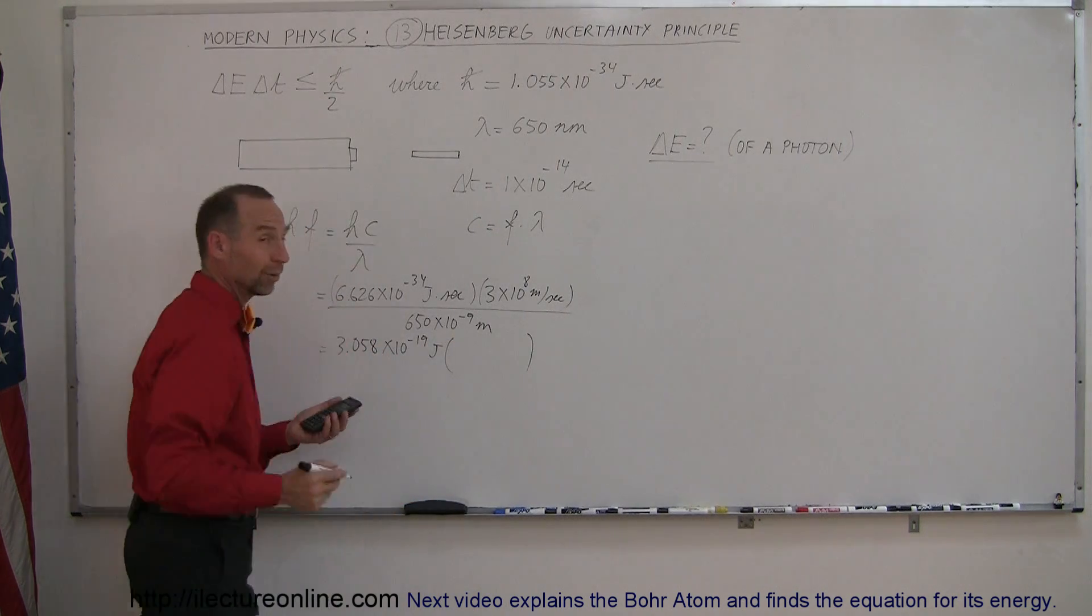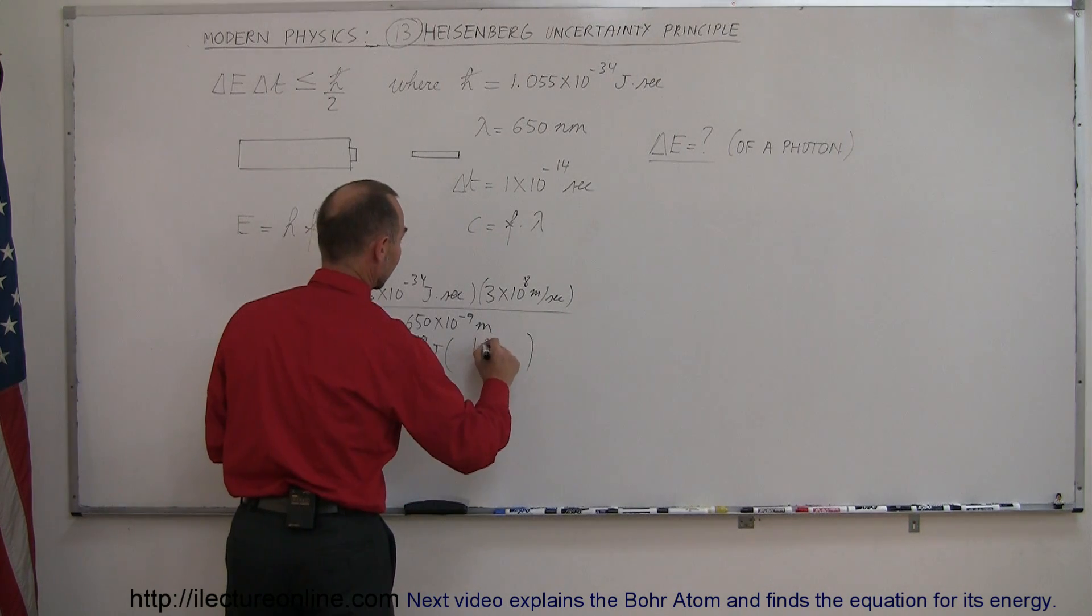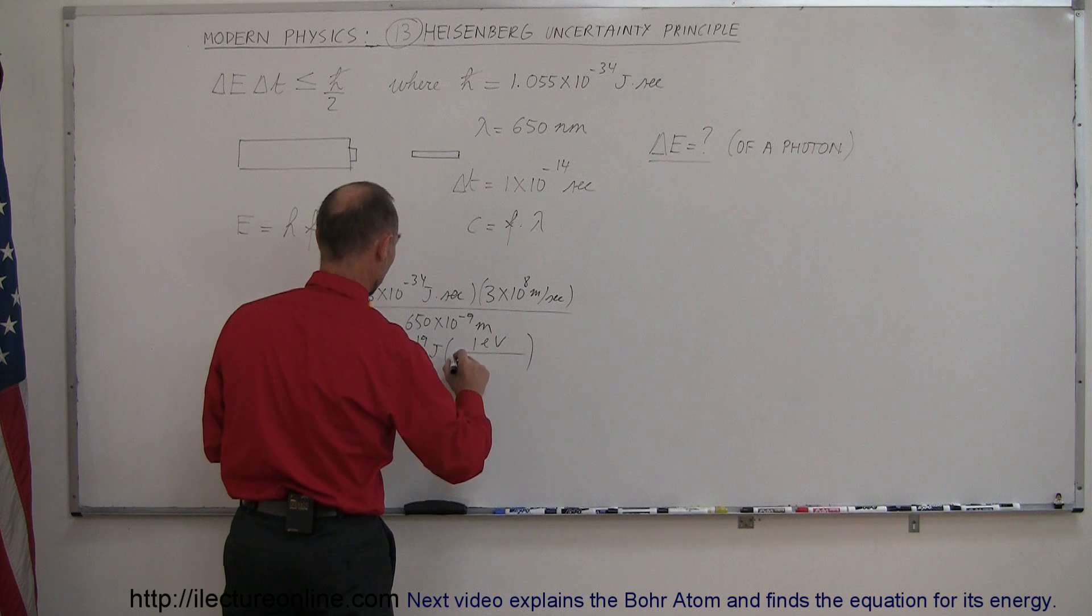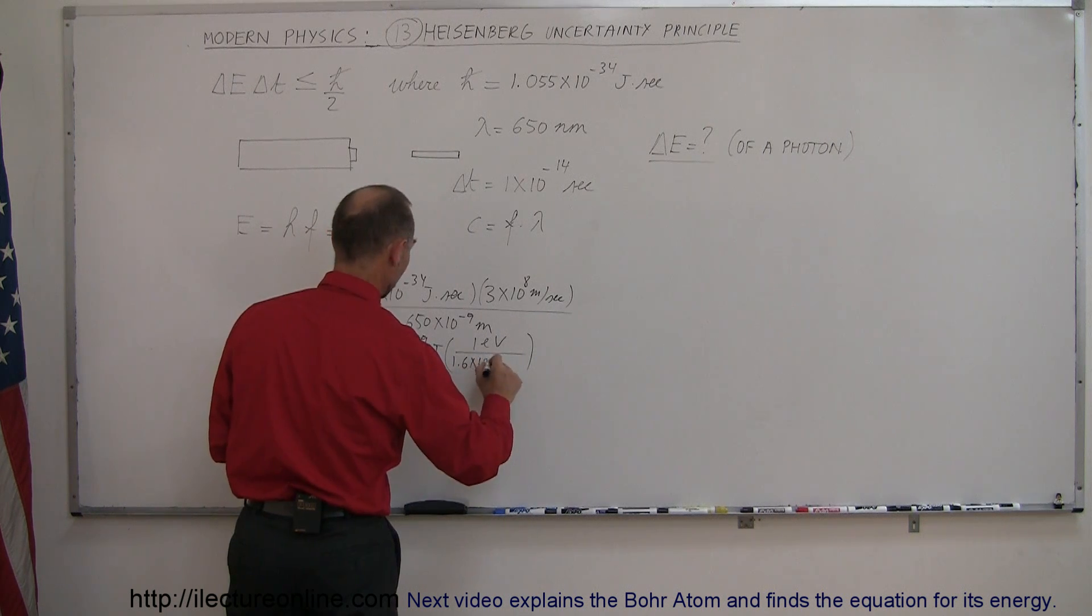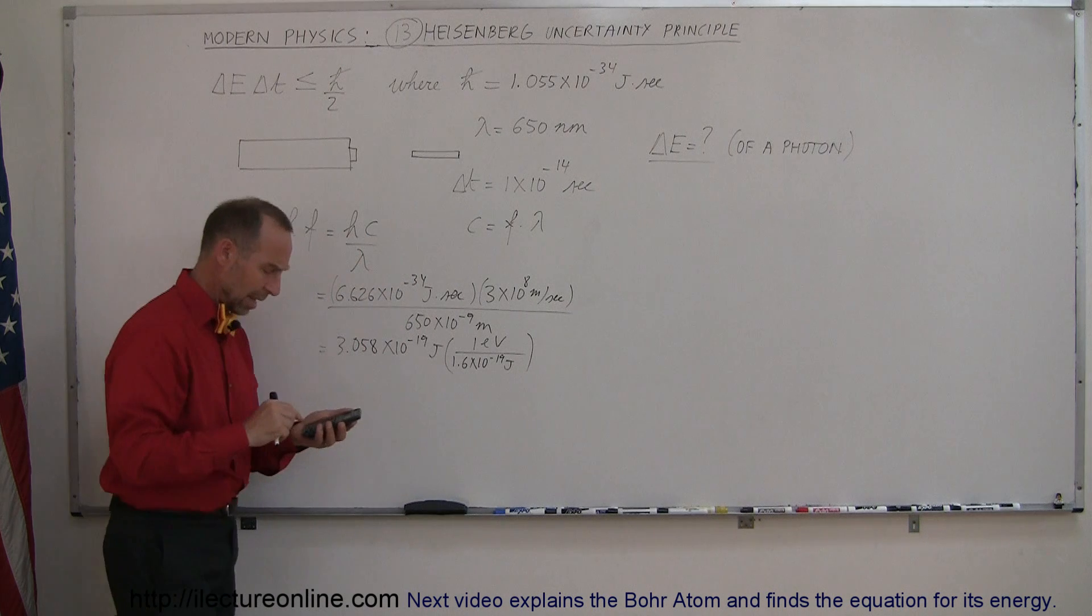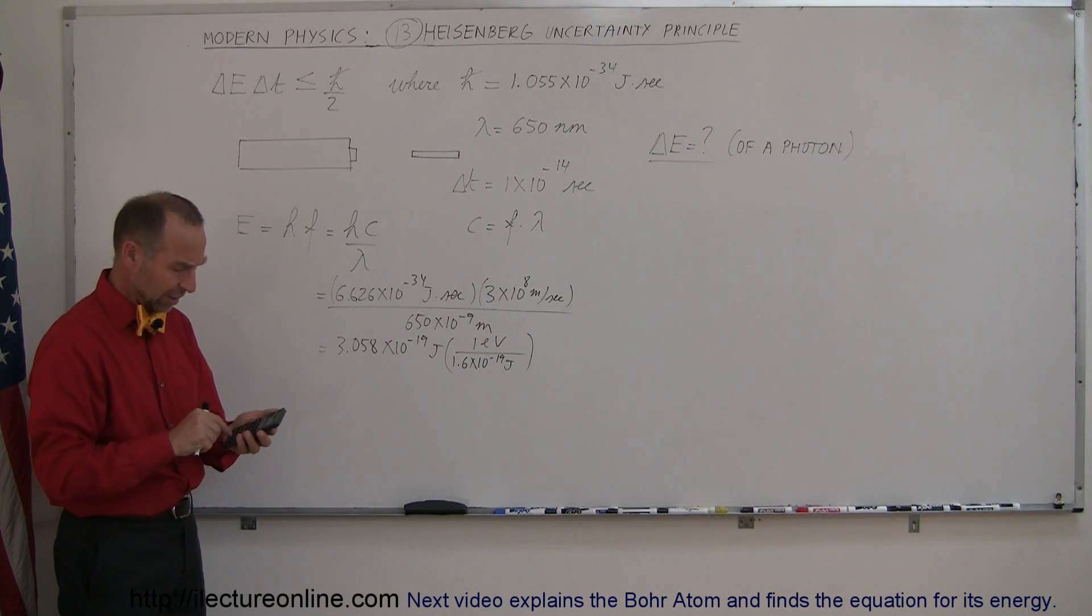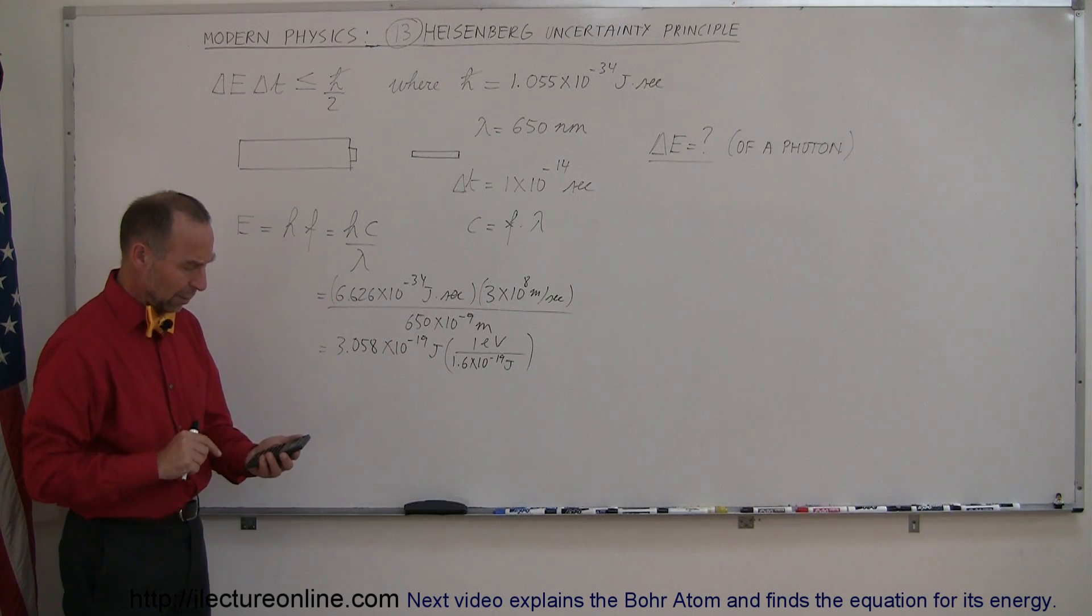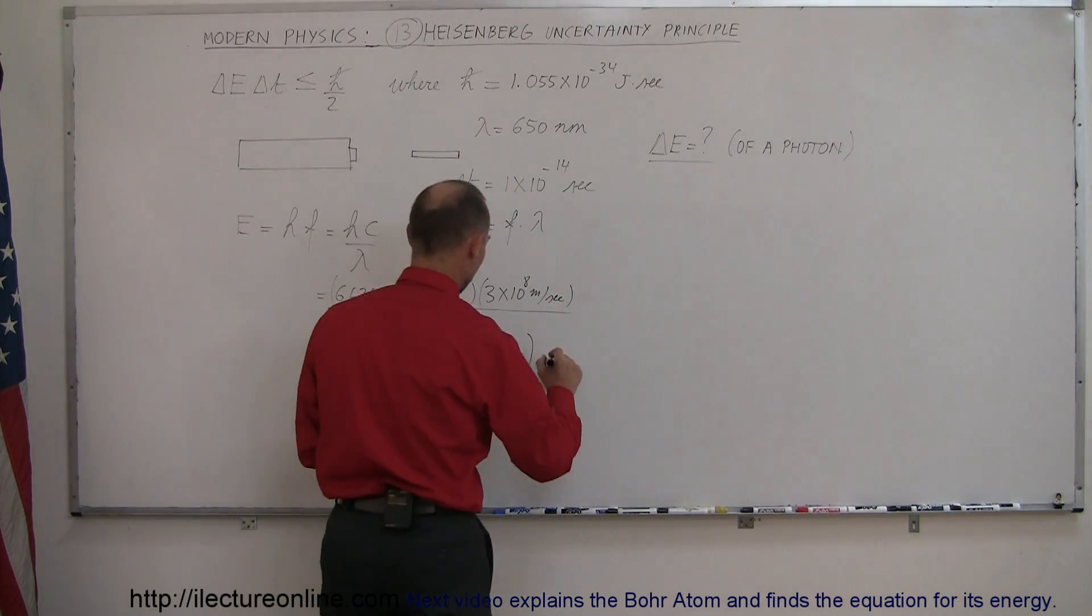And of course, if you want to convert that to electron volts, 1 electron volt is equal to 1.6×10⁻¹⁹ joules. So we take that, divide by 1.6×10⁻¹⁹, and we get 1.91 electron volts.